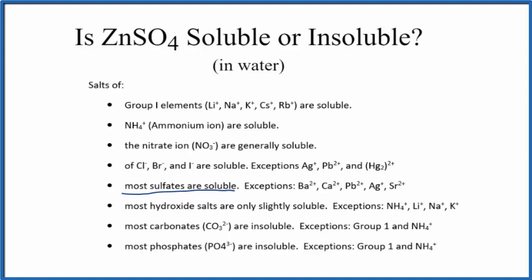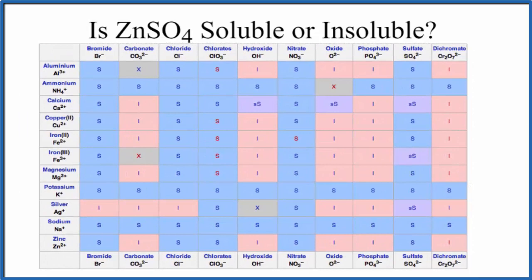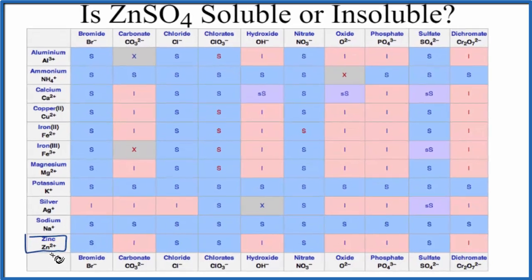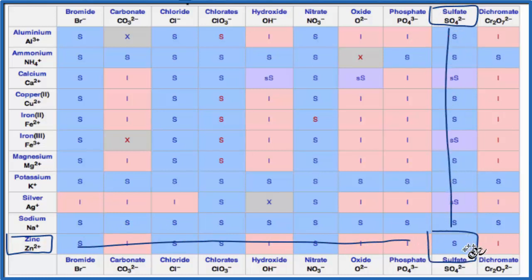We could also take a look at a solubility chart. So here's our solubility chart. We go down, these are the positive ions, and zinc way at the bottom, Zn, that forms 2 plus ions. And we're looking for sulfate. Sulfate is way over here. Sulfate, SO4, 2 minus. So we're going to go over and then down, and we see that S there. That S means that zinc sulfate will be soluble in water.